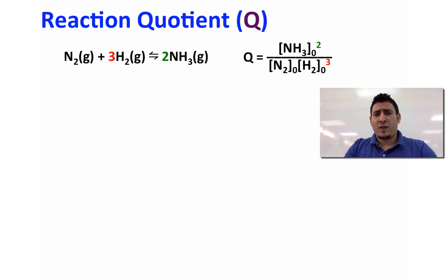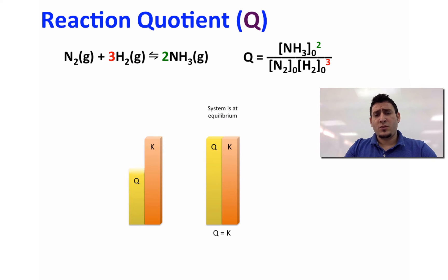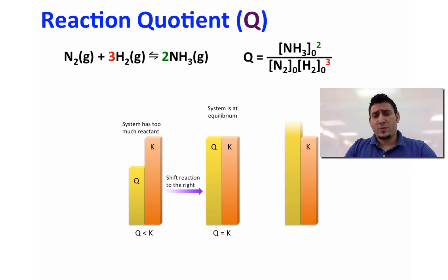If the value of Q is less than the value of K, this means that the system has too much reactants, and therefore the system will shift to the right side to make more product. If the value of Q is greater than the value of K, this means that the system has too much product.